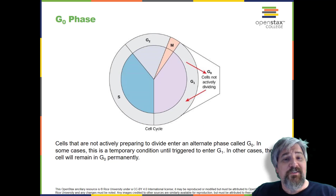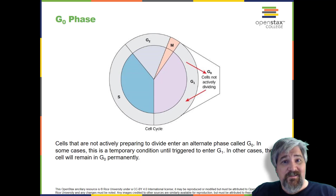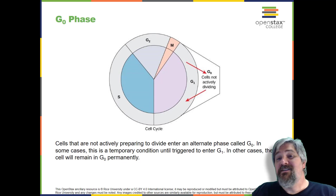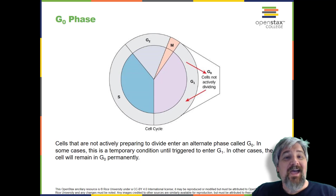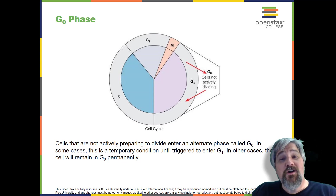G0 phase. Not all cells adhere to the classic cell cycle pattern in which a newly formed daughter cell immediately enters interphase, closely followed by the mitotic phase. Cells in the G0 phase are not actively preparing to divide. The cell is in a quiescent, inactive stage, having exited the cell cycle. Some cells enter G0 temporarily until an external signal triggers the onset of G1. Other cells that never or rarely divide, such as mature cardiac muscle and nerve cells, remain in G0 permanently.